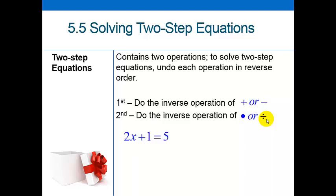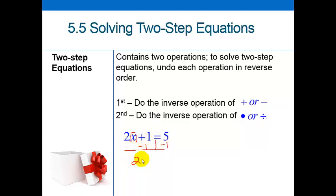Here's your example: 2x plus 1 equals 5. Think of it like a gift — first I multiplied it by 2 and then added 1. So I have to go backwards, like unwrapping a gift. The last thing I did was add 1, so that's the first thing I have to undo. I'm going to subtract 1 from both sides.